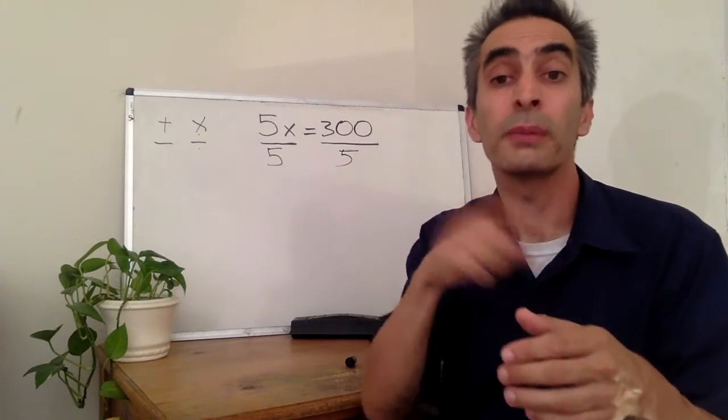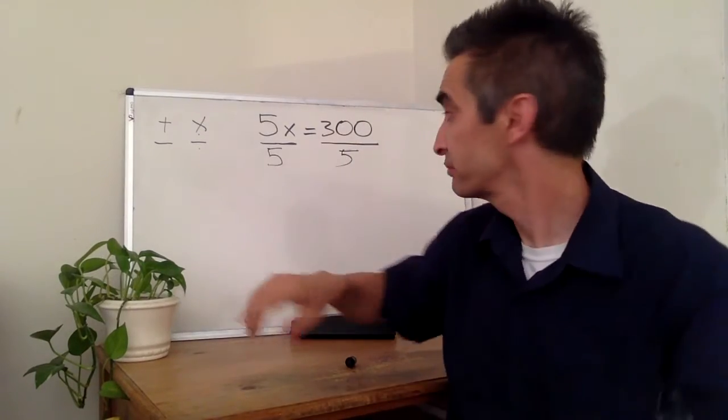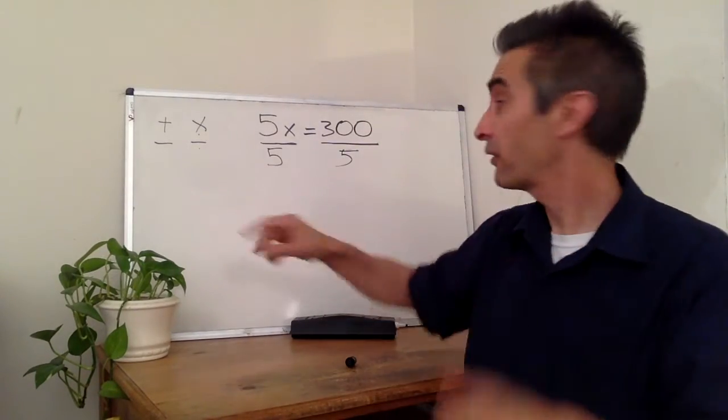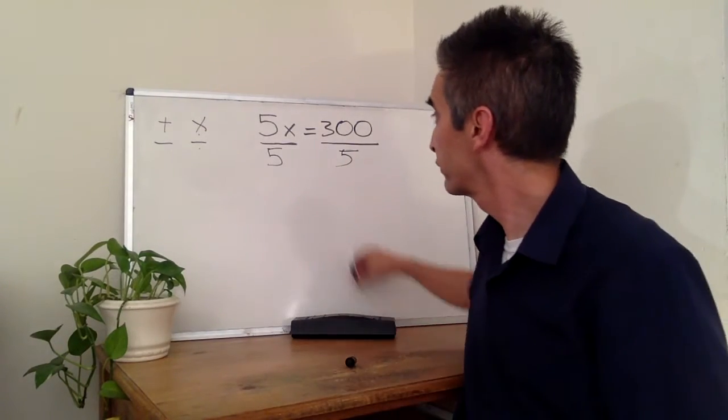5 over 5 equals 1, which means we can divide by 5. We've got the same number on the top and the bottom. Now we've got 5 over 5, which cancel out.